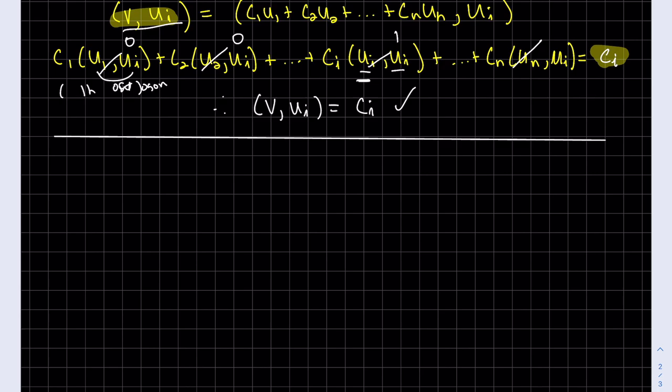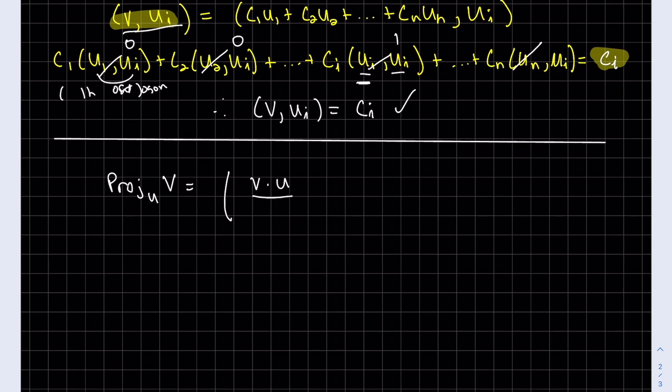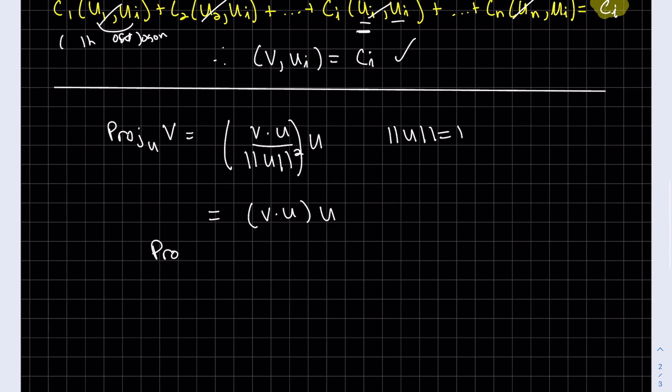Now, the projection of v onto u. If you remember the formula, it's v·u divided by the magnitude of u squared, and then times u. This is a scalar, this is a scalar, and then that's my vector. Remember, our u that I'm using will be orthonormal, so it's equal to one. So this goes away. And we write this using inner products: Projᵤv = (v·u)u.